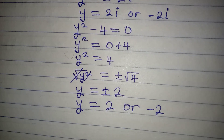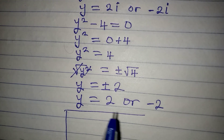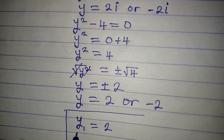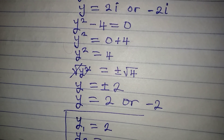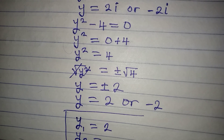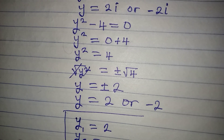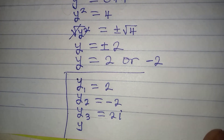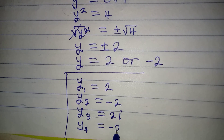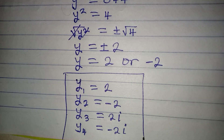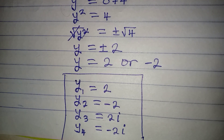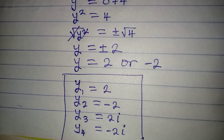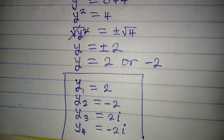Bringing the four solutions together: y1 is equal to positive 2, y2 is equal to minus 2, y3 is equal to 2i, and y4 is equal to negative 2i. These are the four solutions to the equation. Thank you for watching, and do well to subscribe to this channel for more of these videos.